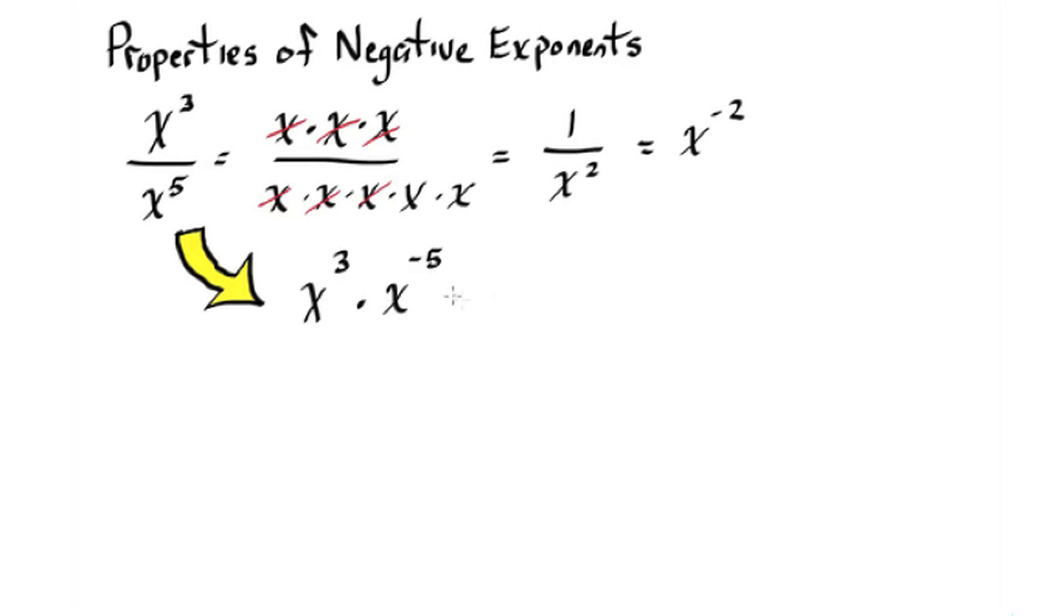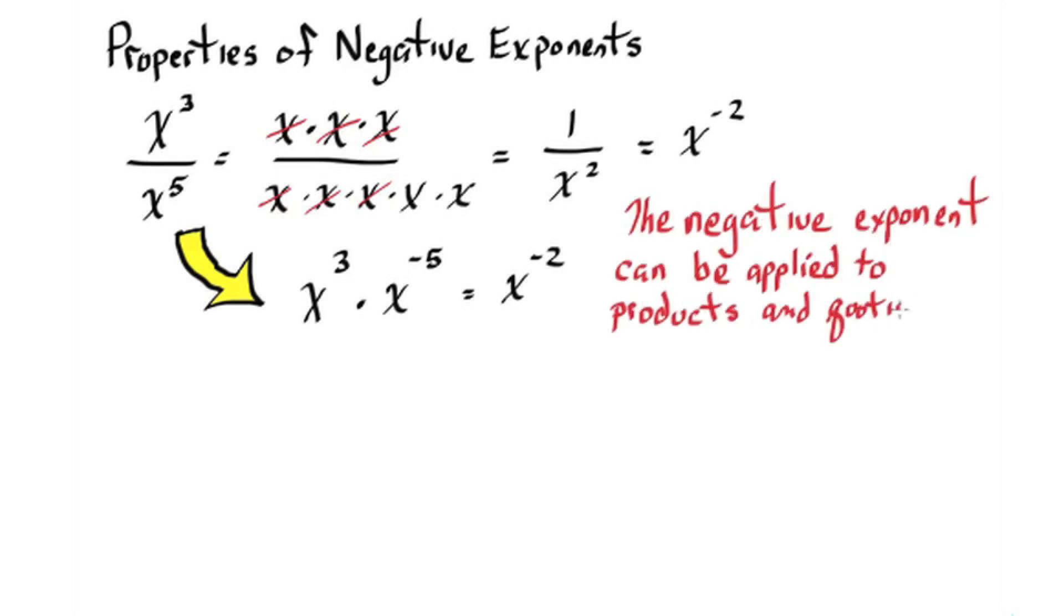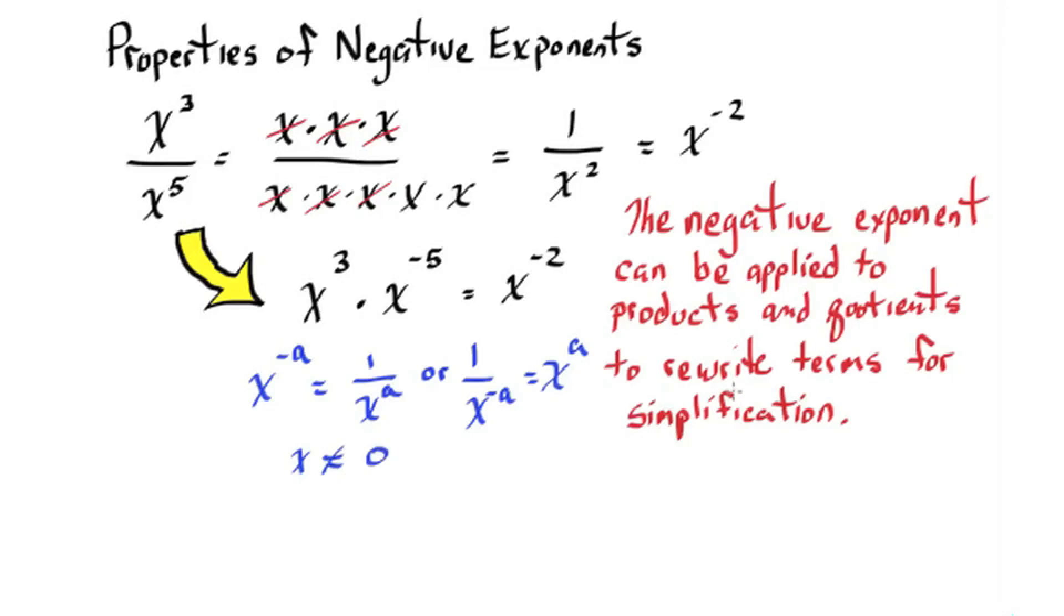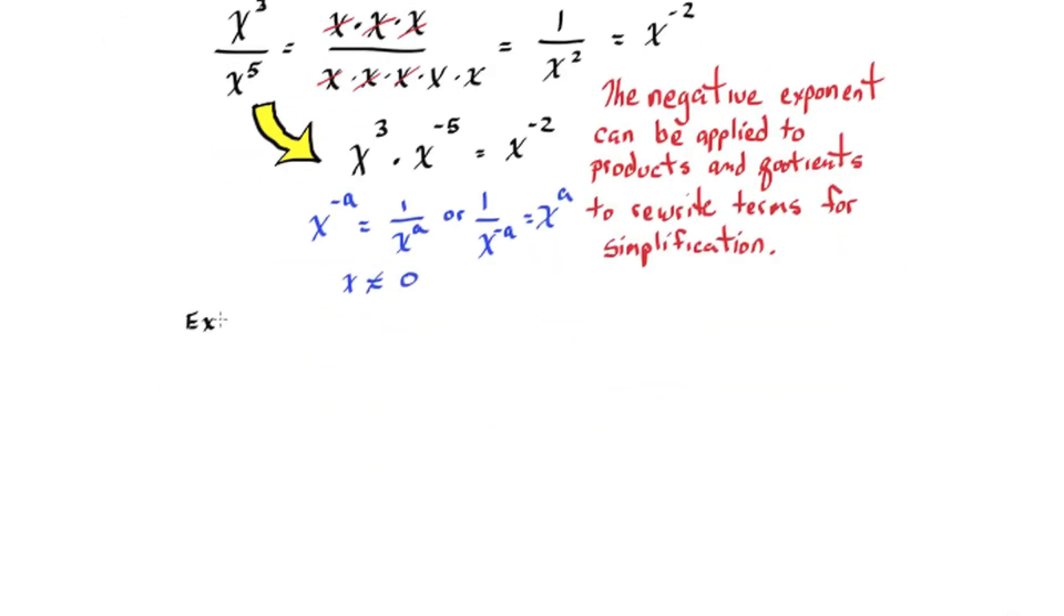Another way of looking at this would be x to the third times x to the negative fifth and we're going to add the exponents in this case and get x to the negative 2. The negative exponent can be applied to products and quotients to rewrite terms for simplification. That's the main point. We use this rule so we can manipulate terms and simplify them. Note that x can't be equal to zero.